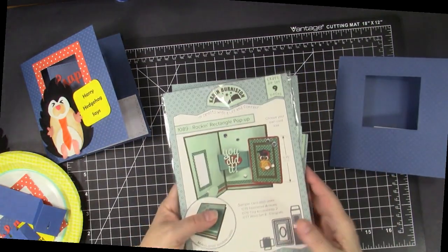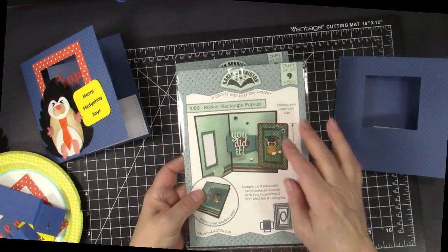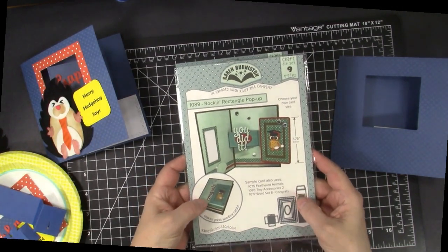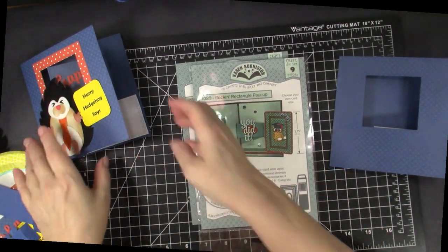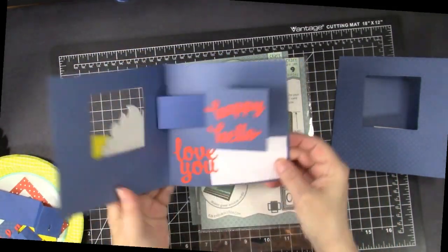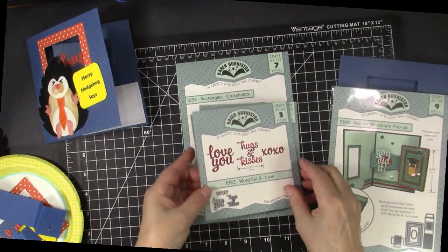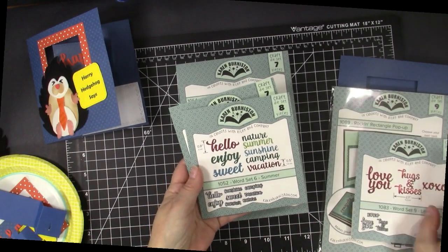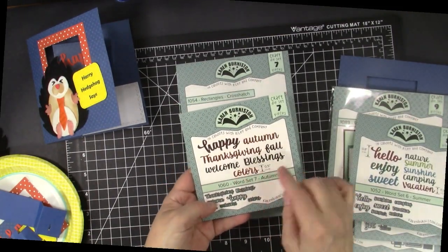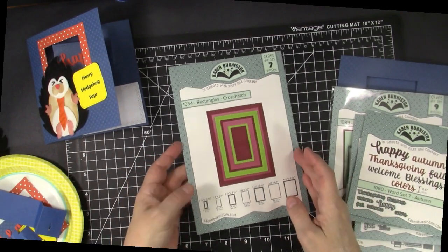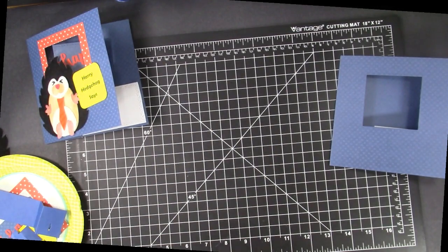These are the Karen Burniston dies that I used to make this card. So the Rockin' Rectangle Pop-Up die set is one of my favorites of her new ones. And this is what's going to easily make this Rockin' Rectangle Pop. I've also used the Love You from the Word Set 9, the Hello from the Word Set 6, and the Happy from Word Set 7, as well as Rectangle's Crosshatch dies, all from Karen Burniston.